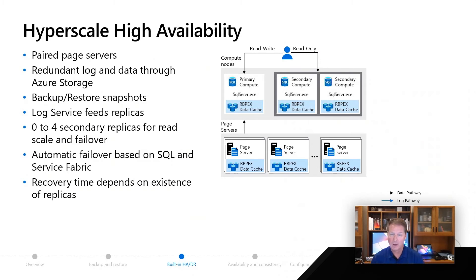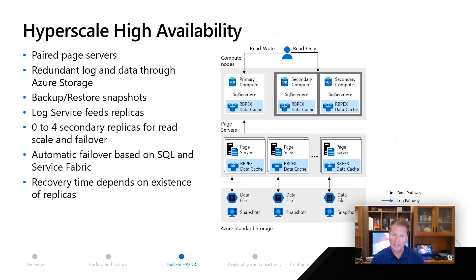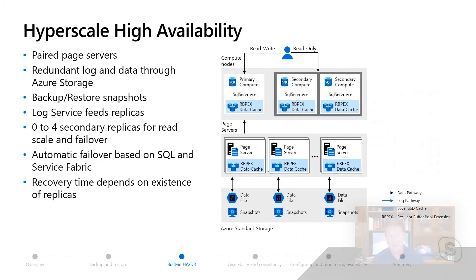The data files themselves are stored on Azure Storage. You might think this will be slower than general purpose, but it's really amazing — because we have page servers and caches, this caching system gives us great performance. Since the database files are on Azure Storage, we can take advantage of snapshot technology to make backup and restore extremely fast and not even dependent on the size of the database. You're going to be able to do restores in just incredible time.